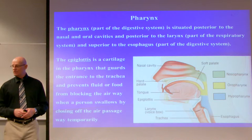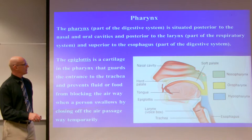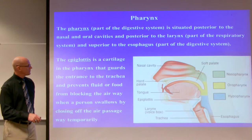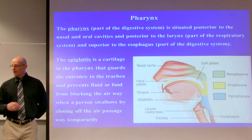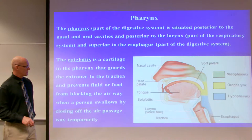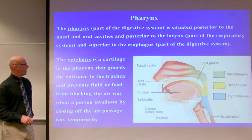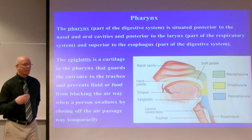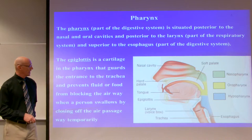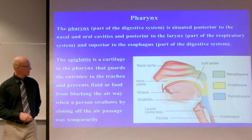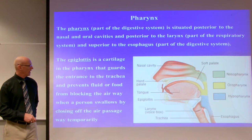The pharynx is part of the digestive system, located posterior to the nasal cavity, back of the oral cavity, and superior to the larynx — about five inches long. The larynx is part of the respiratory system and the esophagus is part of the digestive system. The pharynx sits on top of the esophagus. The epiglottis is a cartilage that, to prevent aspiration, closes over the glottis: the trachea comes up and the epiglottis covers over the glottis, allowing food to pass all the way down into the esophagus.